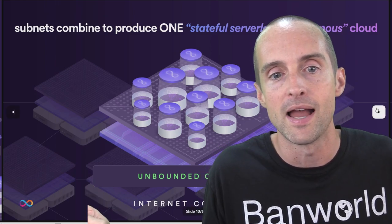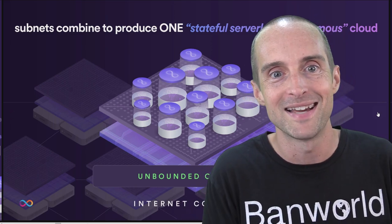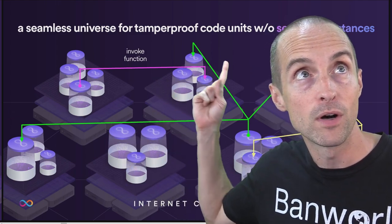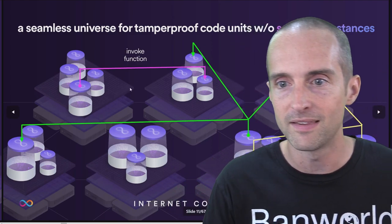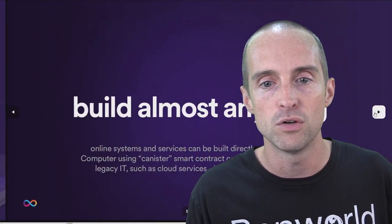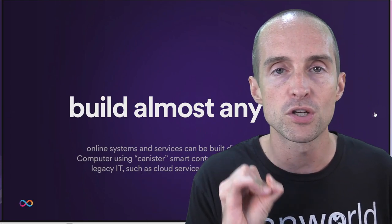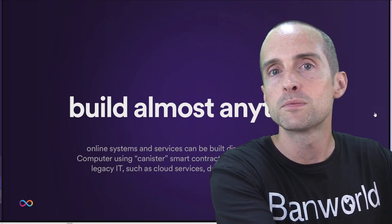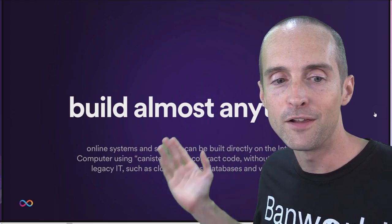That's where I want to have my money — in something that could go to a trillion-plus dollar market cap from under two billion today. Canister smart contracts are tamper-proof code units without servers that interact through function calls, contact other canisters, and even call out to Web2 nodes. This structure allows you to build almost anything — and that's why Internet Computer is so exciting. I'm all in on Internet Computer because you can build anything on it.